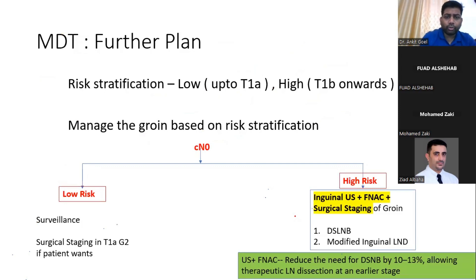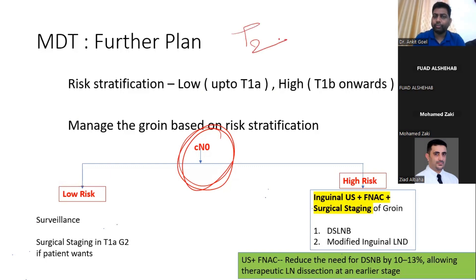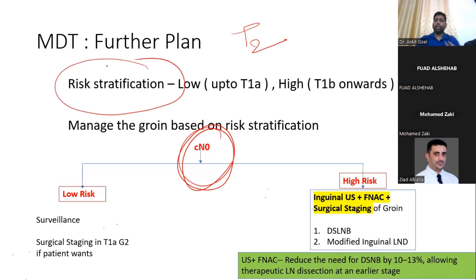Regarding the next plan of management for a clinical node 0: with a histopathology of T2, so we have a T2 penile cancer, clinical node 0. We discuss in an MDT and the first thing we do is risk stratify the tumor. Risk stratification is the first step. We do it as low risk or high risk.